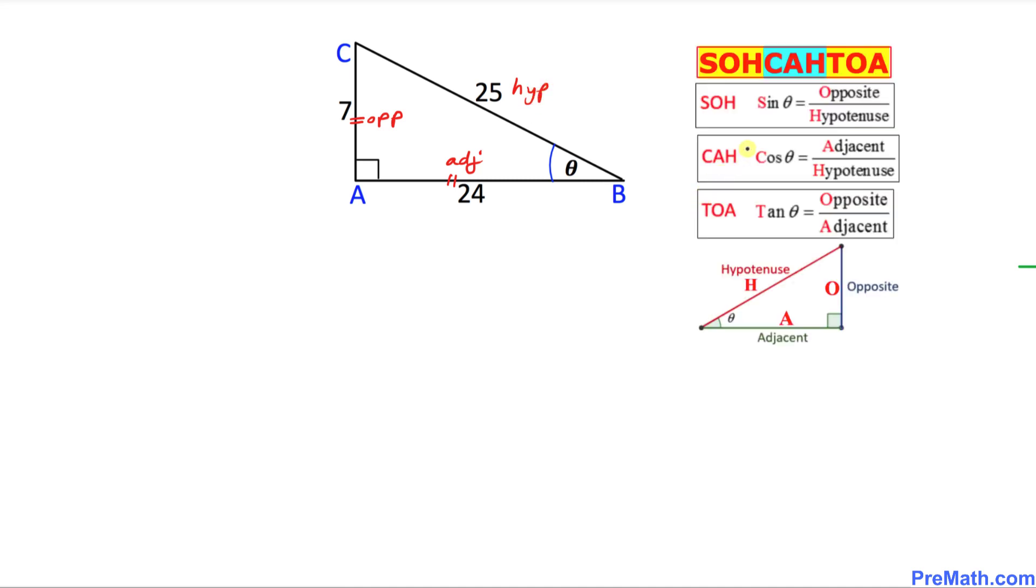Now let's look at this SOHCAHTOA chart or SOHCAHTOA formula. What that means is SOH stands for sine equal to opposite over hypotenuse. CAH stands for cosine equal to adjacent over hypotenuse. And finally, TOA means tangent equal to opposite over adjacent.